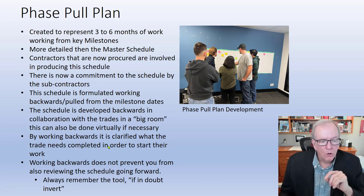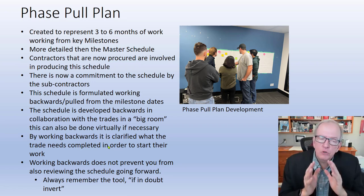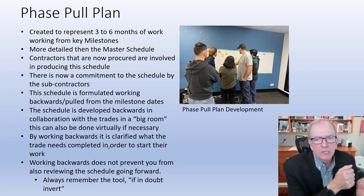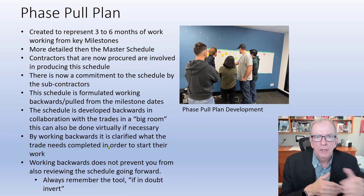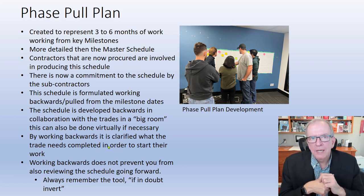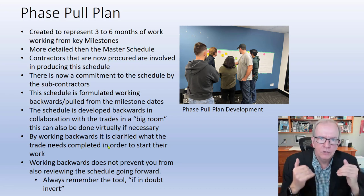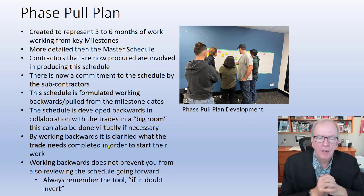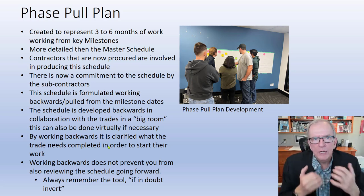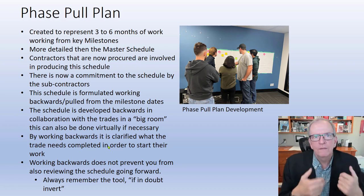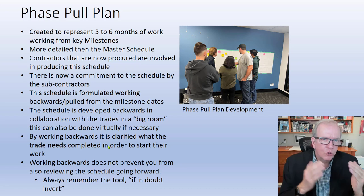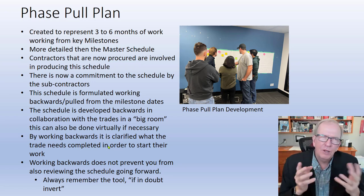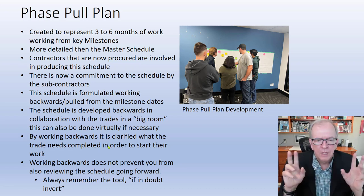The schedule develops backwards from the finished milestone. Each trade is determining what they need before they can start. For example, the roofing trade needs the decking on the roof; the structural steel trade needs the foundation walls in with anchor bolts in the correct places. What each trade needs before they can start is called 'conditions of satisfaction' — what do you need, and to what level of quality, so you can effectively do the work. There's a lot of opportunity for cross-communication trade to trade, which doesn't happen often in traditional methods.